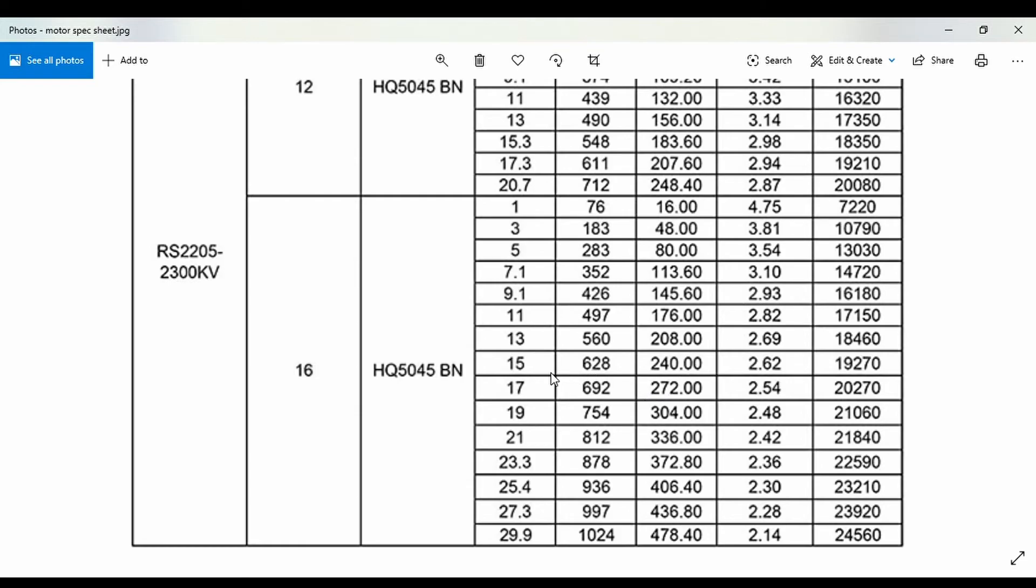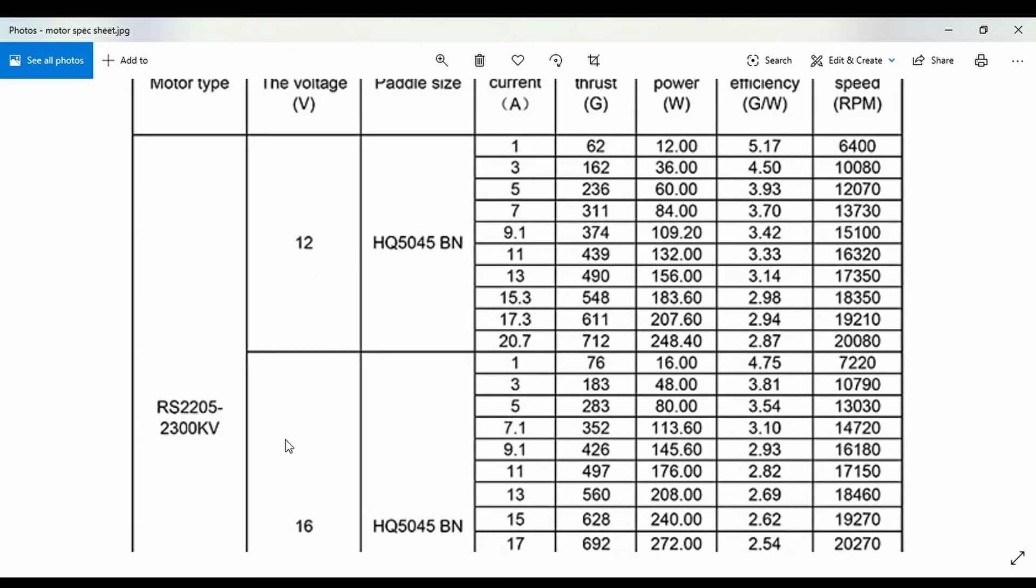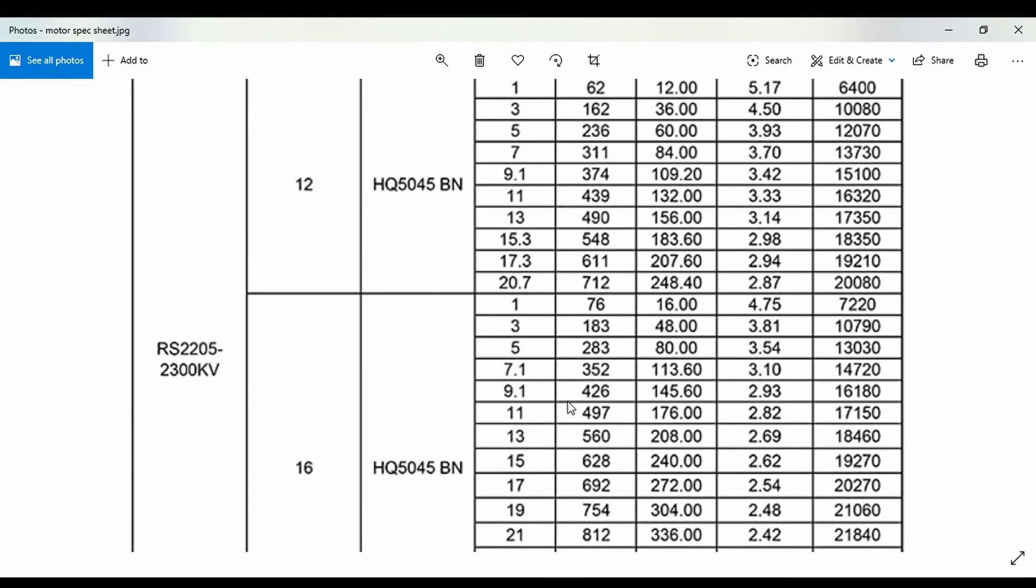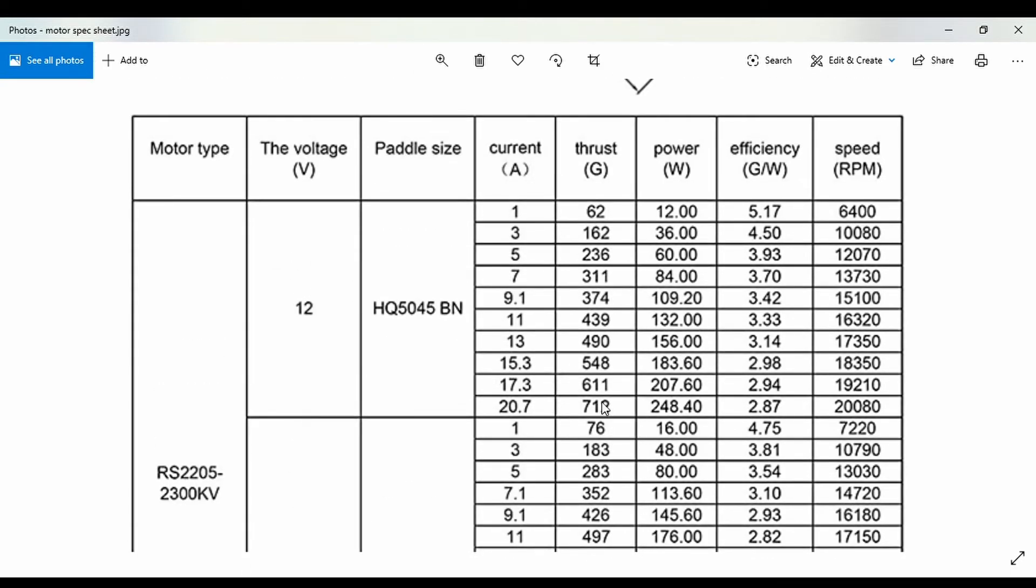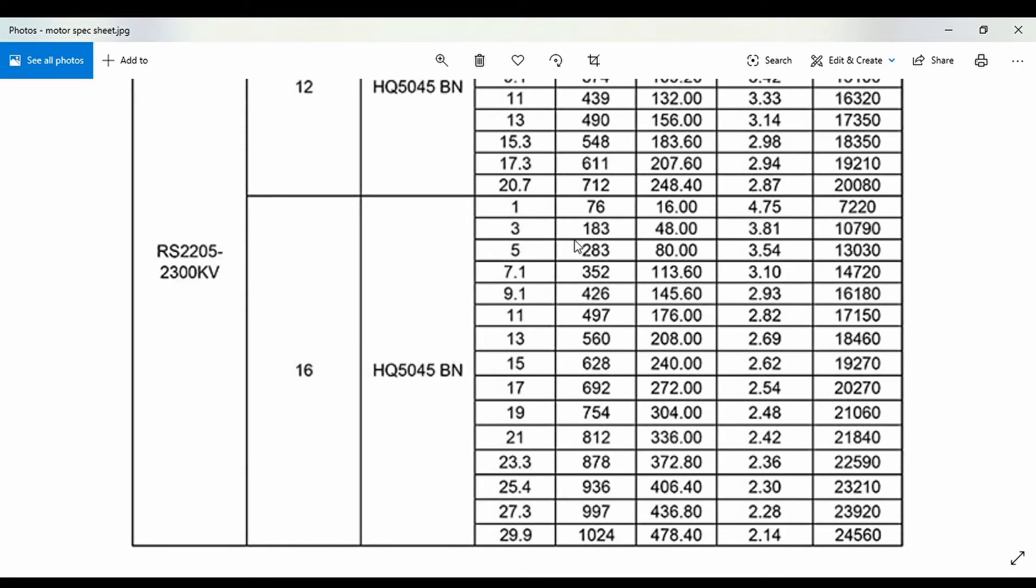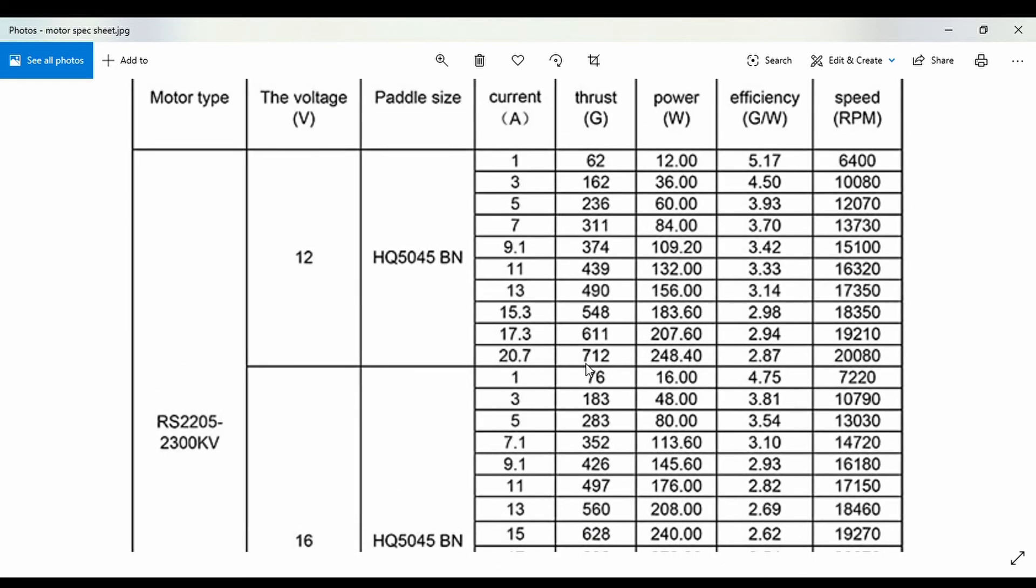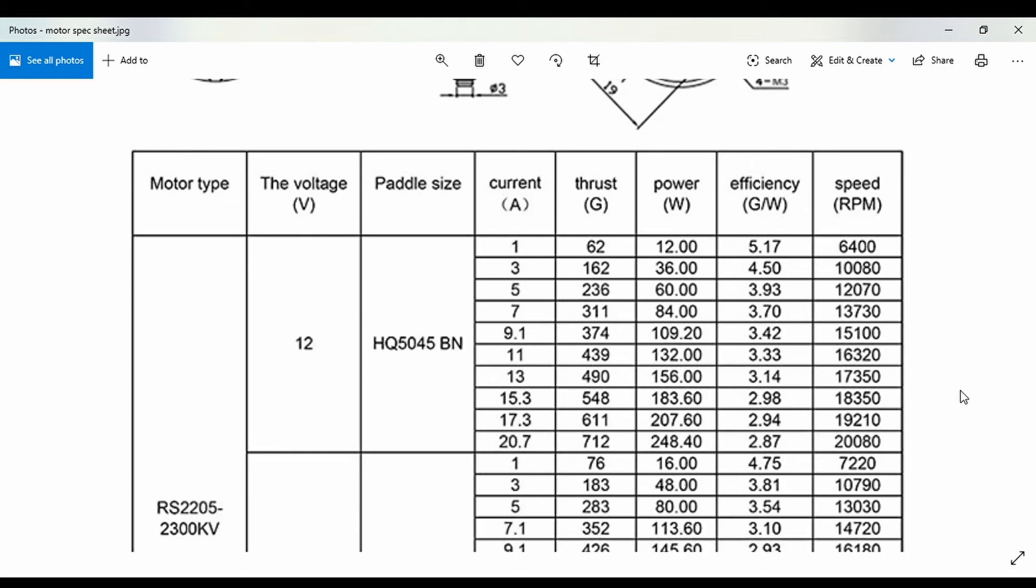From the motor spec sheet, you can choose the battery voltage depending on the thrust you get. If you want more thrust, go for a 4S battery. If you want less thrust, go for 3S. You should also consider that you won't always be flying at 100% speed. You'll be around 50 to 80 percent. From here, after calculating the thrust, you can get the thrust-to-weight ratio if you have the estimated weight of the drone.